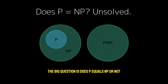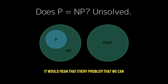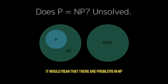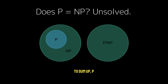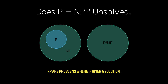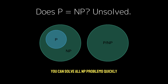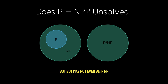The big question is: does P equal NP or not? If P equals NP, it would mean that every problem that we can verify quickly (NP) can also be solved quickly (P). If P does not equal NP, it would mean that there are problems in NP that are fundamentally harder to solve than to check, confirming that some computational problems are inherently difficult even if we can verify their solutions in polynomial time. To sum up: P are problems solvable quickly in polynomial time by a deterministic Turing machine. NP are problems where a given solution can be verified quickly. NP-complete are the hardest problems in NP, such that solving one quickly means solving all NP problems quickly. And NP-hard are problems at least as hard as NP-complete problems, but may not even be in NP.